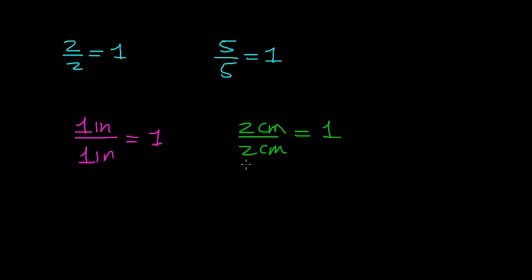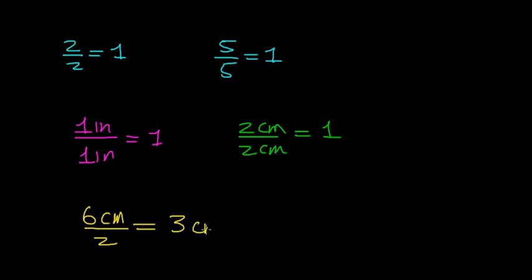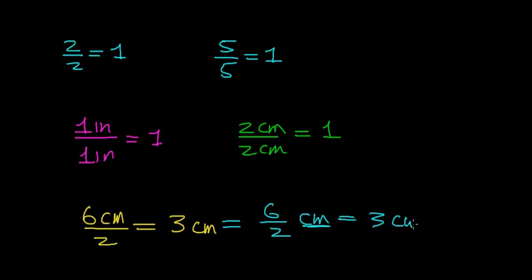Try not to confuse dividing a number including its units by itself, with dividing a number like 6 centimeters by the number 2. In this case it won't equal 1 — it will equal 6 divided by 2, with the unit of centimeters remaining. So this equals 3 centimeters. We rewrote 6 over 2, kept the units on the side, and got 3 centimeters.